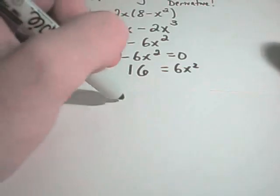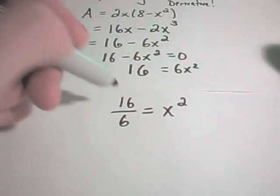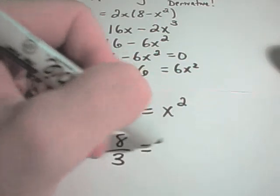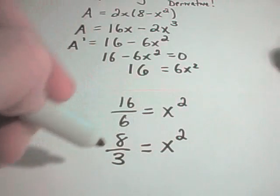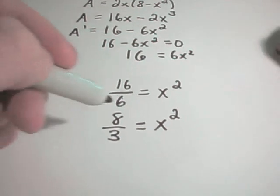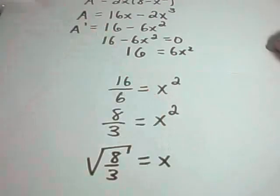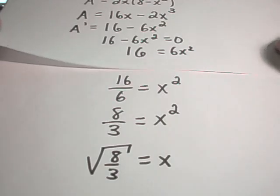And if I divide, I'll get 16 over 6 equals x squared. Which, what does that reduce to? They're both even. So, it looks like we get 8 thirds. That's what x squared equals. And if I take the square root of the top, well, I'm not even going to do it. We'll get square root of 8 thirds. And again, we'll get positive, negative algebraically when you solve this equation.